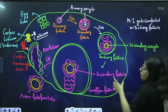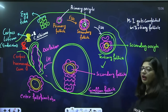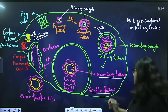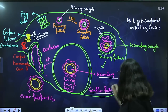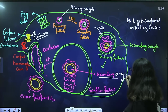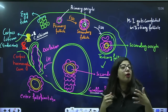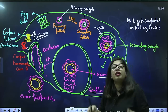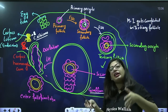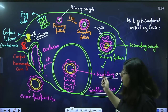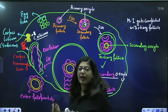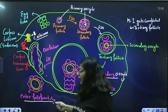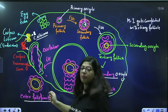This tertiary follicle keeps growing into a large mature Graafian follicle, which still has the secondary oocyte. The secondary oocyte is the one which will later become the egg — but it cannot become an egg if it remains in the ovary. It has to move out into the fallopian tube where it will meet the sperm, and only then can it complete meiosis II. This follicle will rupture under the influence of LH and move out from the ovary into the fallopian tube for fertilization.